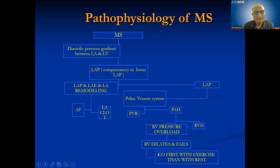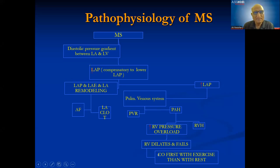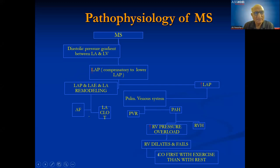The persistent increase in LA pressure leads to LA remodeling — any chamber subjected to increased pressure increases in size. So the LA enlarges, which ultimately leads to atrial fibrillation and LA clot at a later stage. Always check the size of the LA and any clots. A persistent increase in LA pressure can lead to atrial fibrillation.